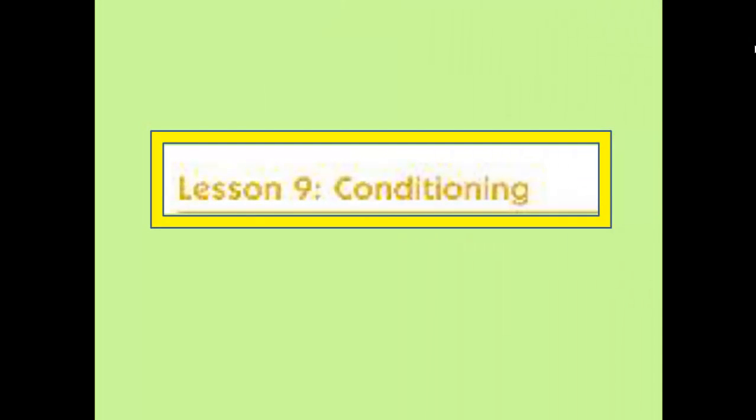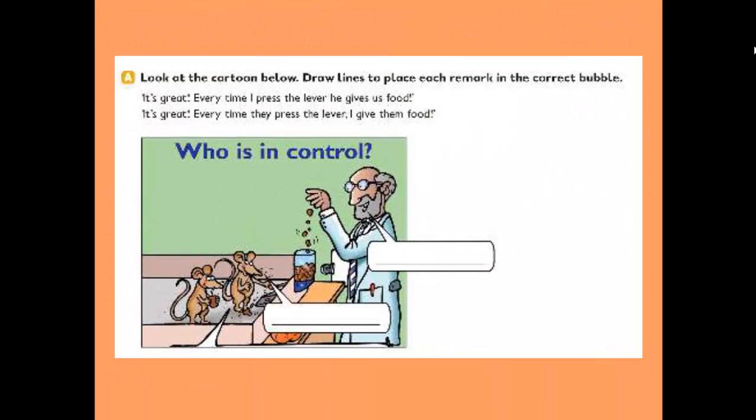Bismillah ar-Rahman ar-Rahim, hello my students to lesson number nine. This lesson we'll talk about conditioning. Let's do the first task or the first exercise, exercise number A. Here we have a picture, a picture of two mice and here a scientist.